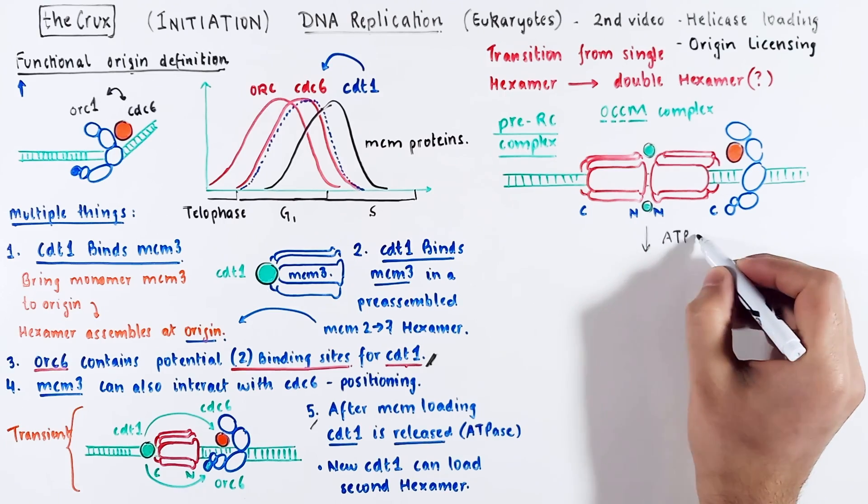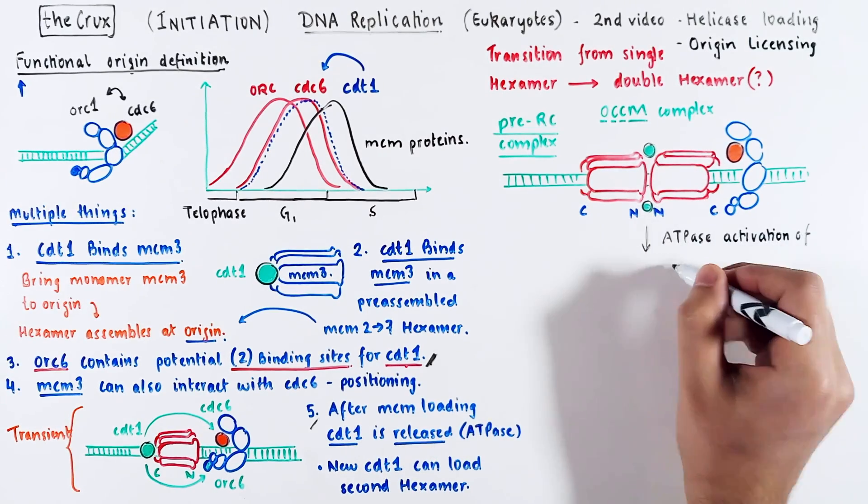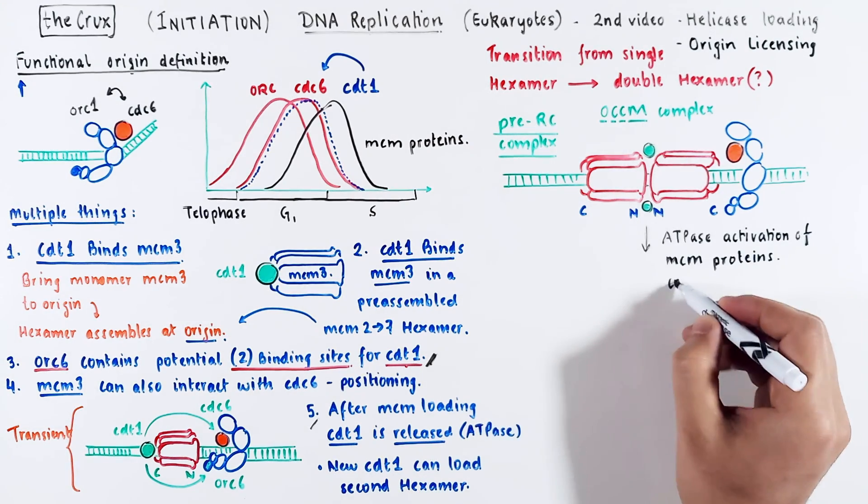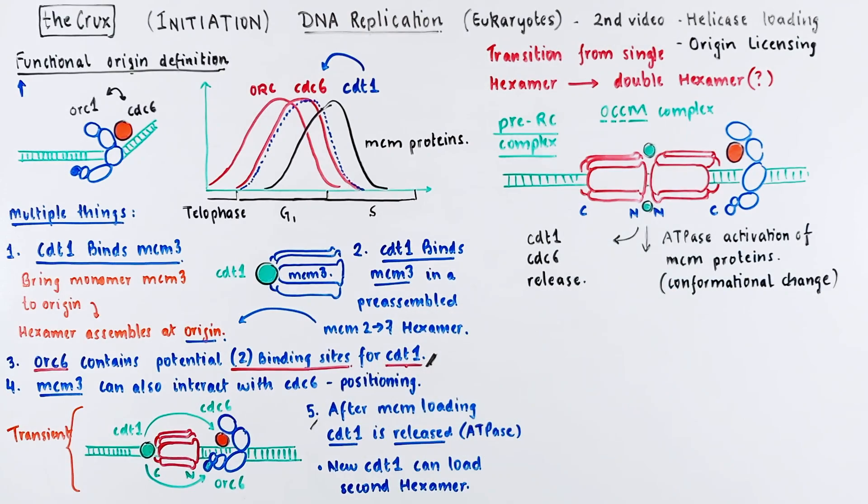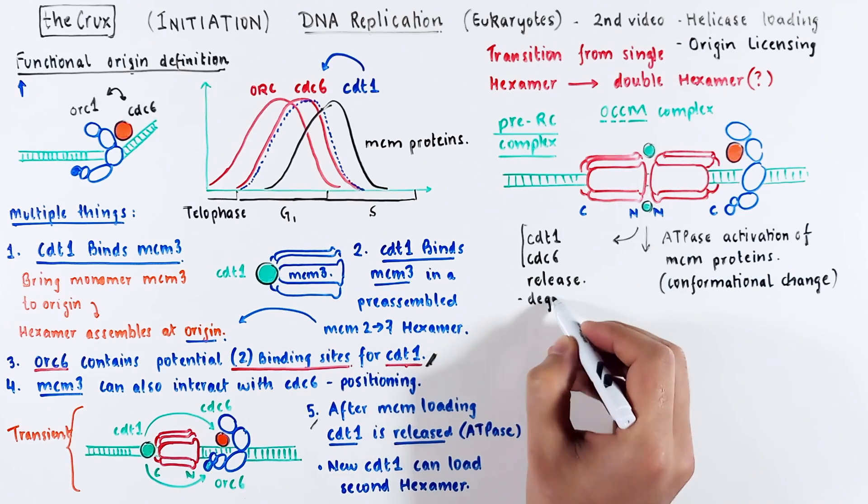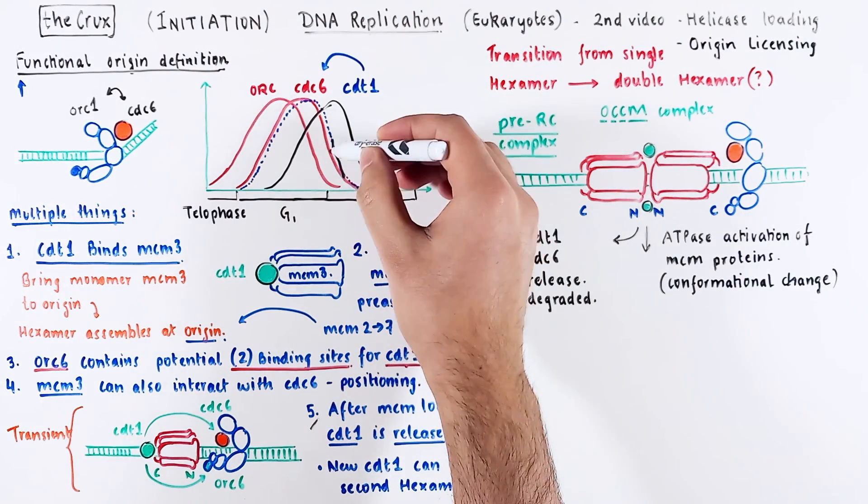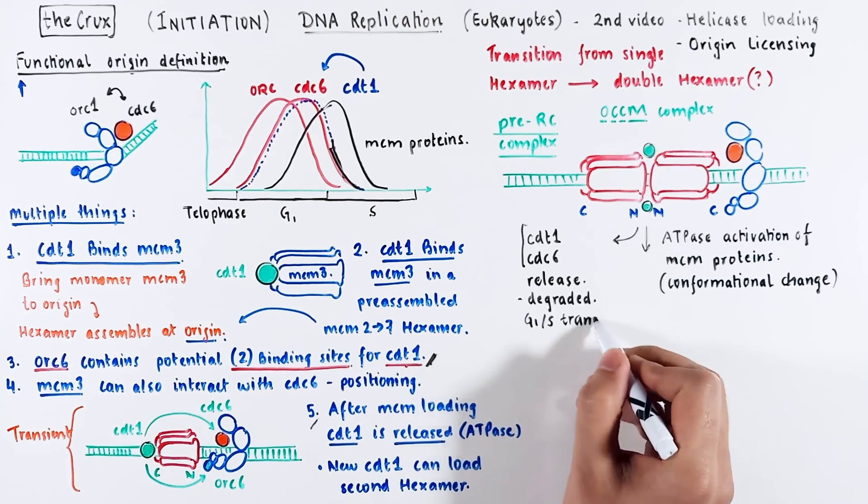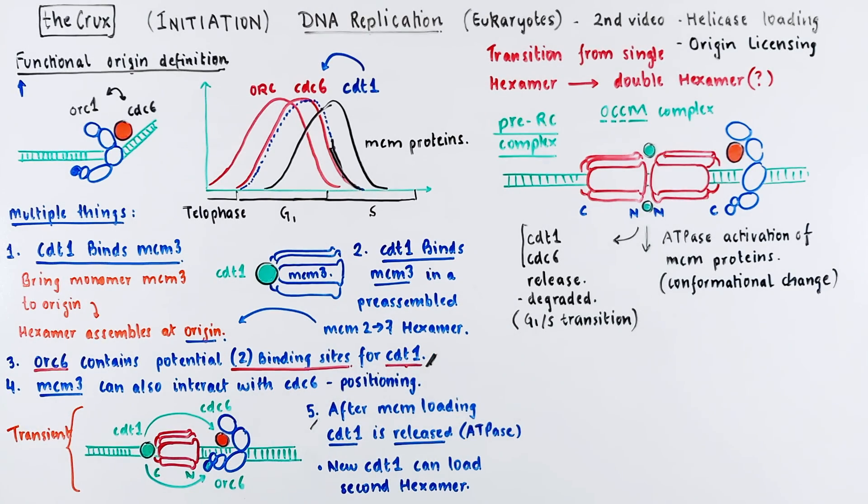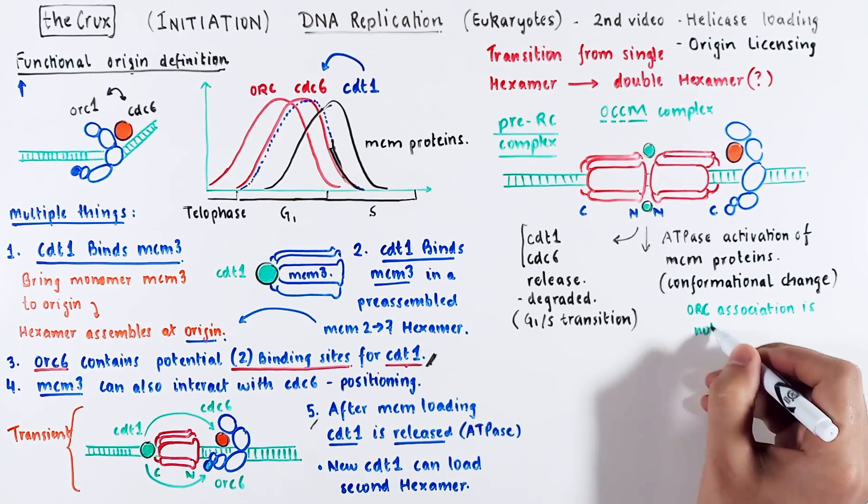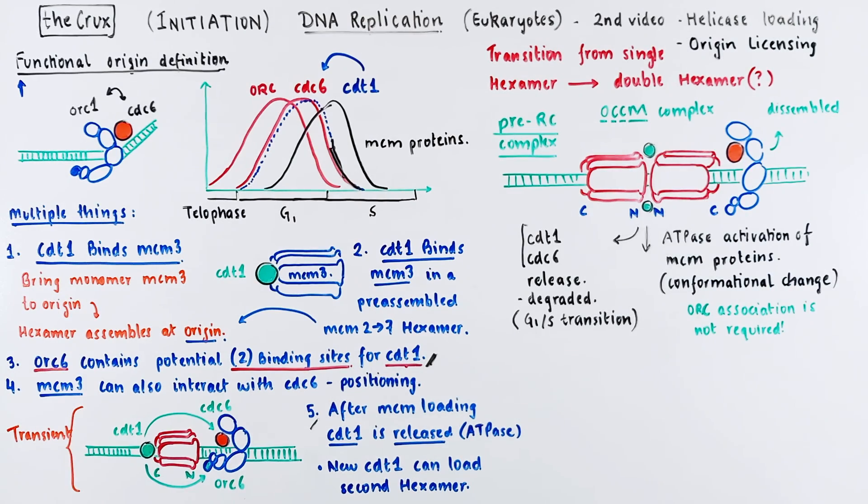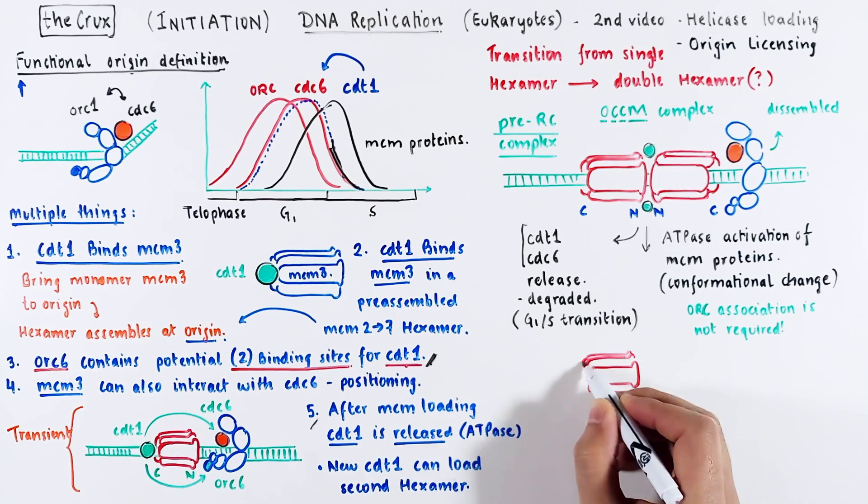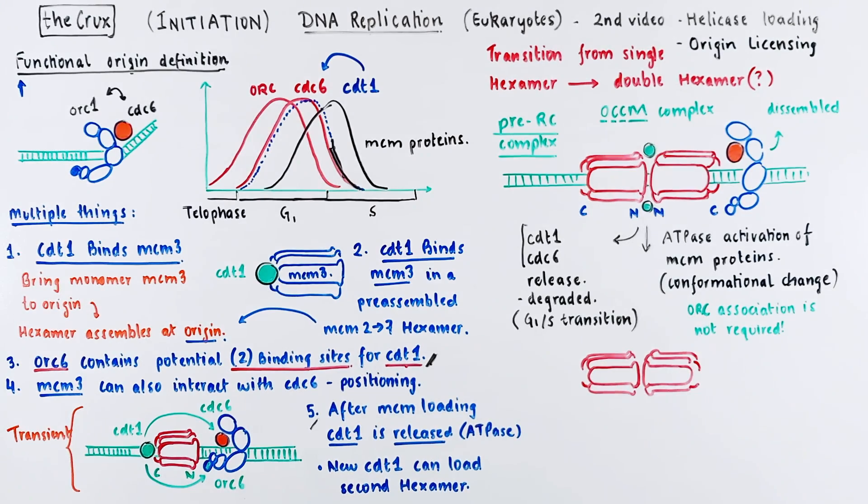The double hexamer formation activates ATPase domains again within the MCM proteins and further causes some movements. As a result of these movements, the CDT-1 and CDC-6 dissociate away from the complex. And if inhibitory proteins are around, they get degraded, as we saw in video 1 during the G1S phase transition. At this point, the ORC association is also not required. And by the time this occurs, which is in the late G1 phase, the ORCs are down-regulated, disassembled, and degraded. The new complex that forms is much cleaner and less cluttered. It only has double hexamers.